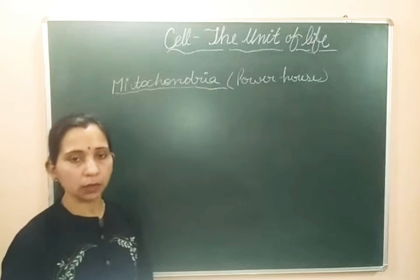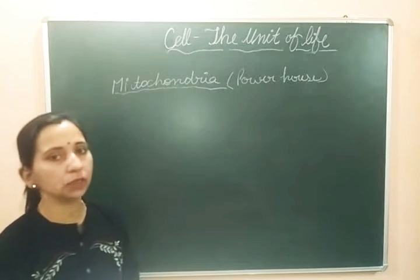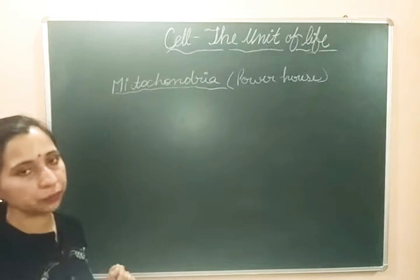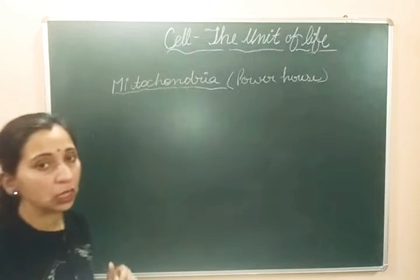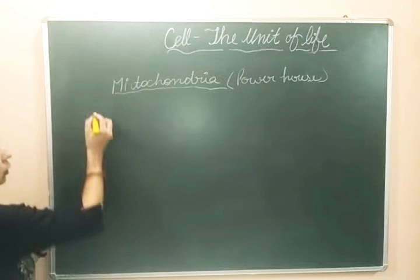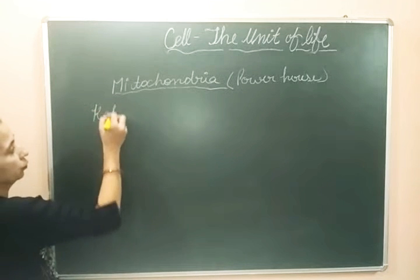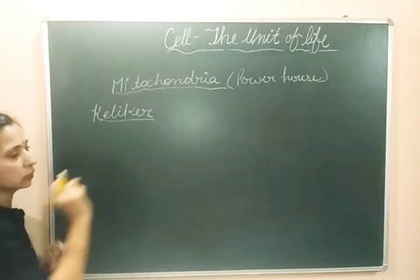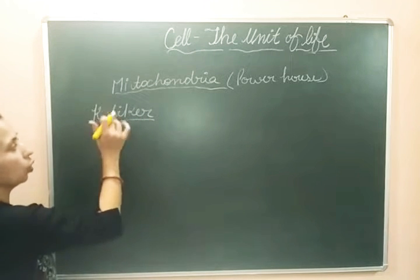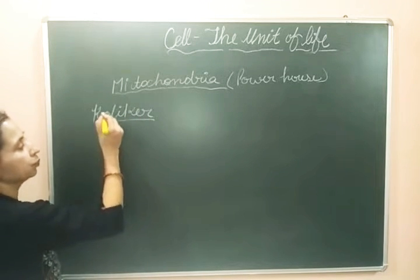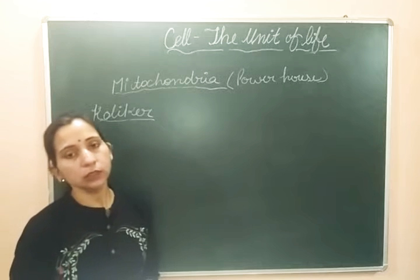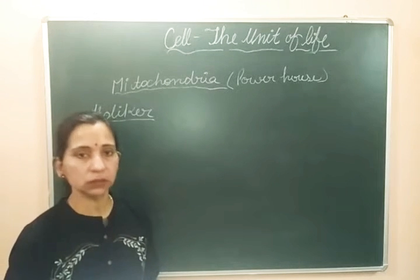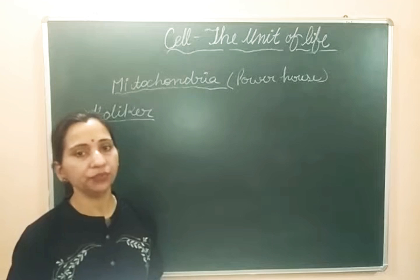Let's take a look at the historical background and some important discoveries related to mitochondria. Mitochondria was first discovered by a scientist whose name was Colical. This scientist discovered the mitochondria in the flight muscle cells of insects.